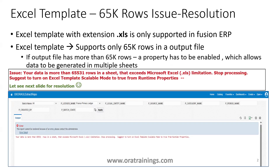In BIP, the output of an Excel template can only be XLS, and it supports either CSV or XML format — it does not support XLSX. That's the reason we have this issue: if the output generates more than 65,000 rows, the output file will not work.